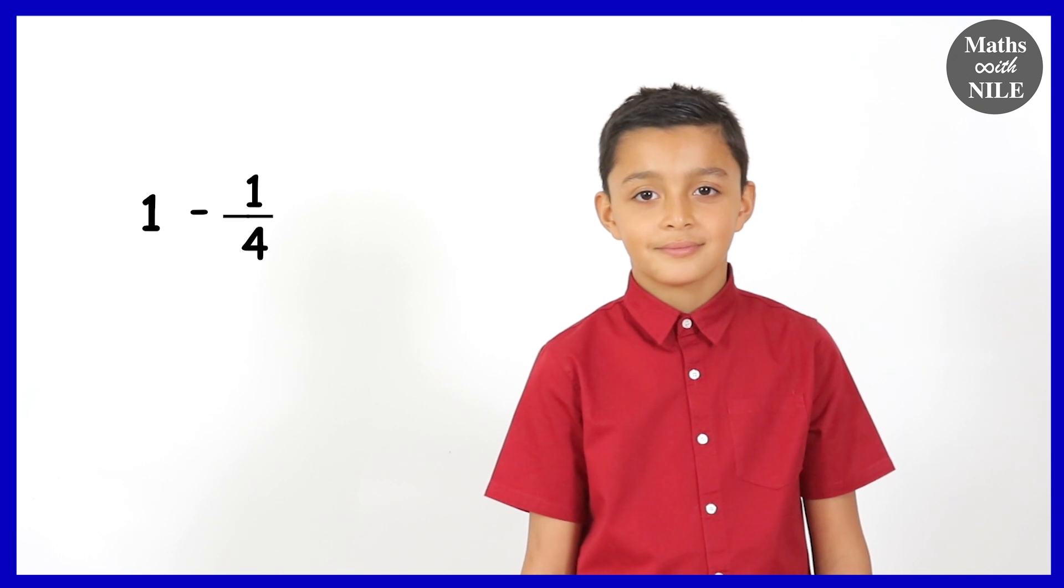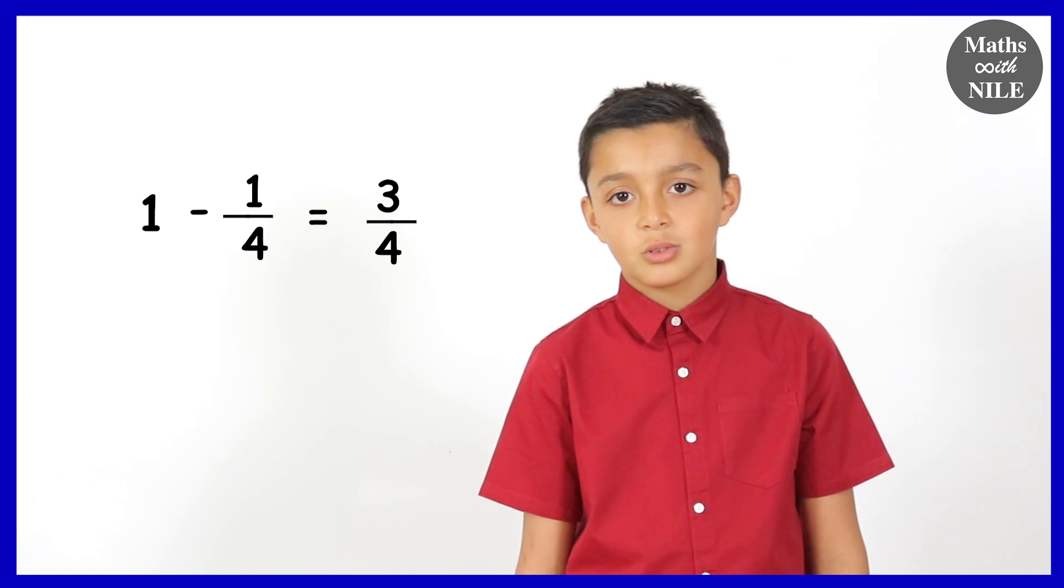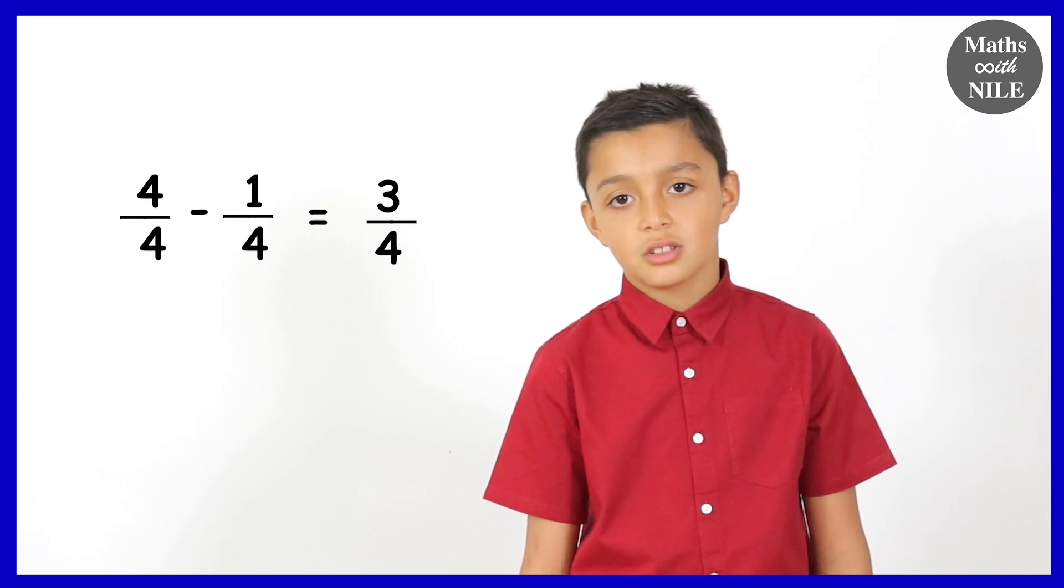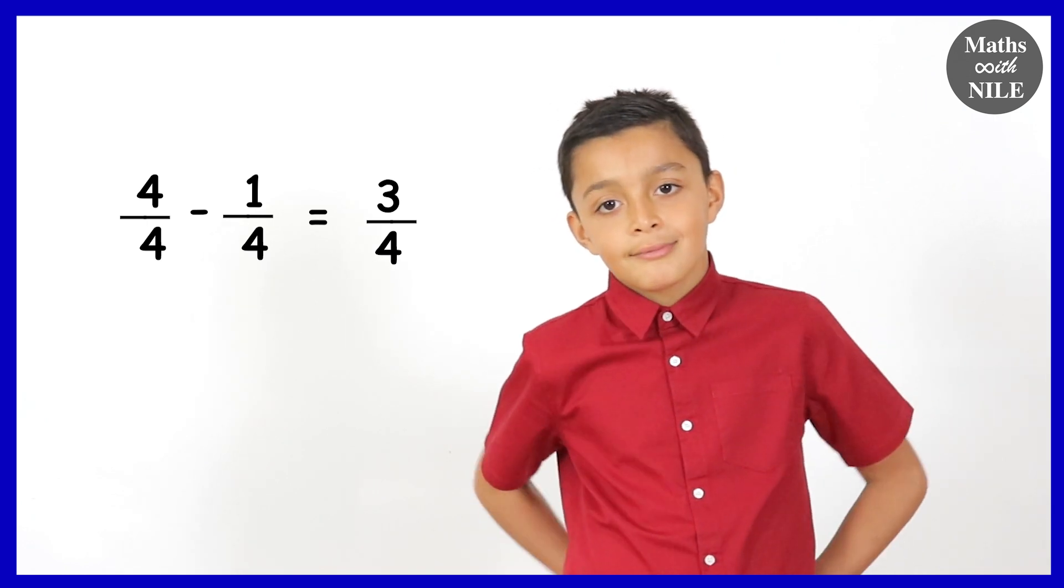Let's do one more of those. What is one whole take away one quarter? Three quarters. Because? Because one whole is equal to four quarters and then the four quarters take away one quarter is three quarters. Great.